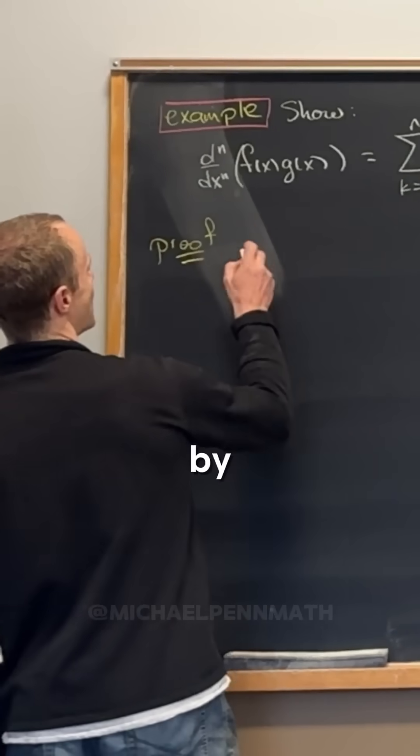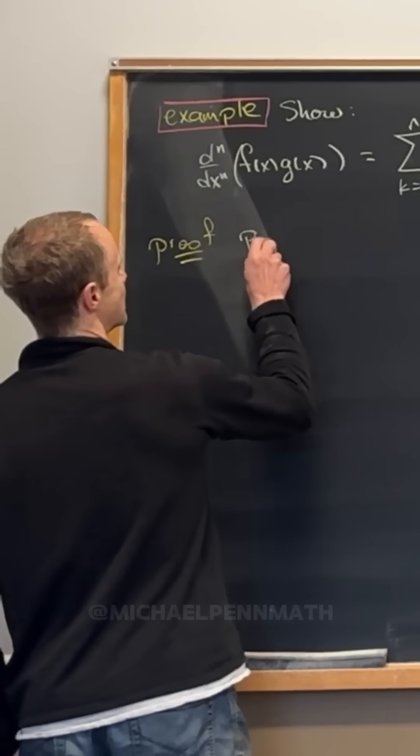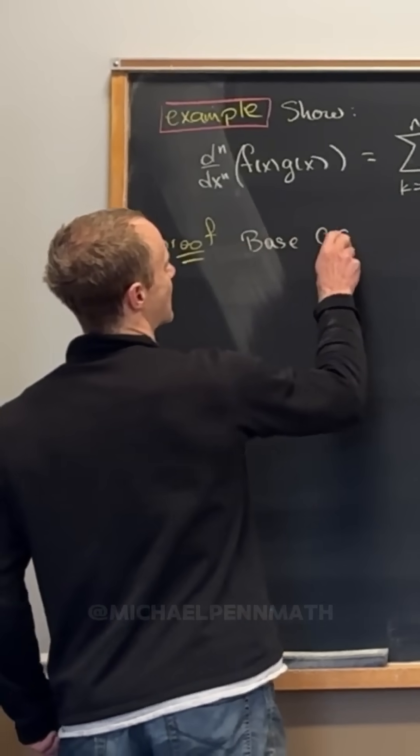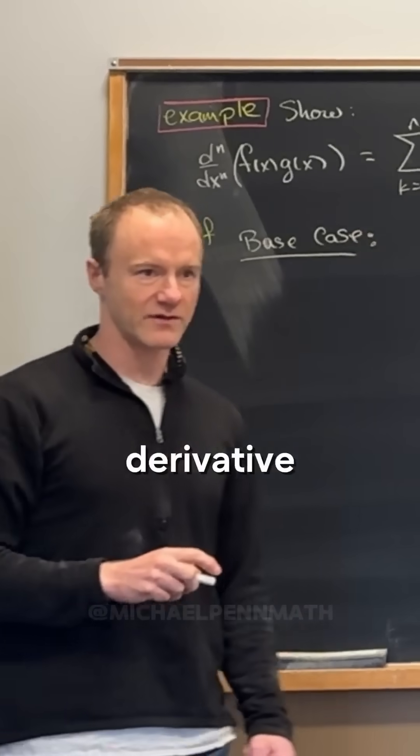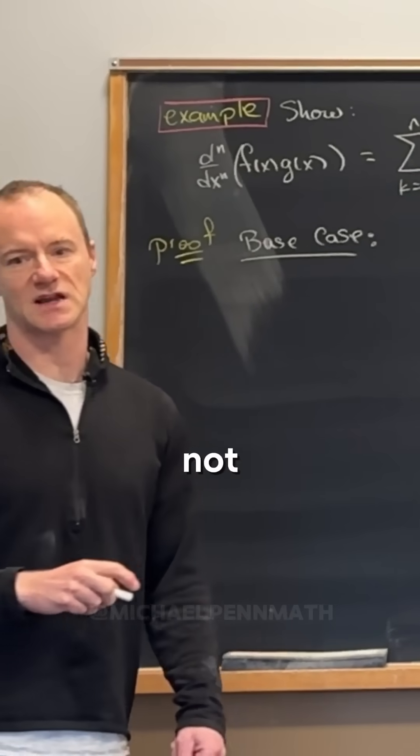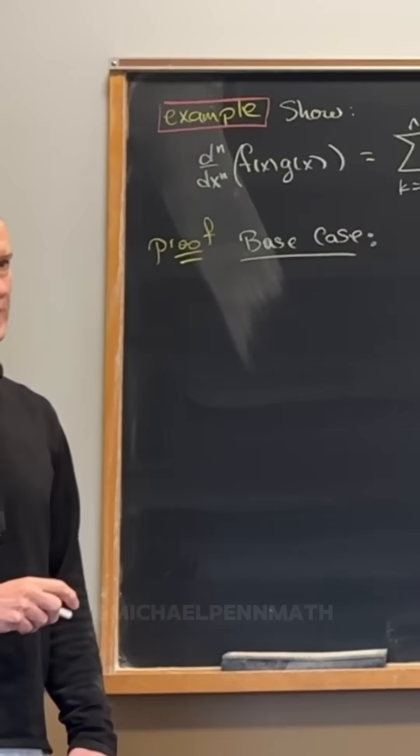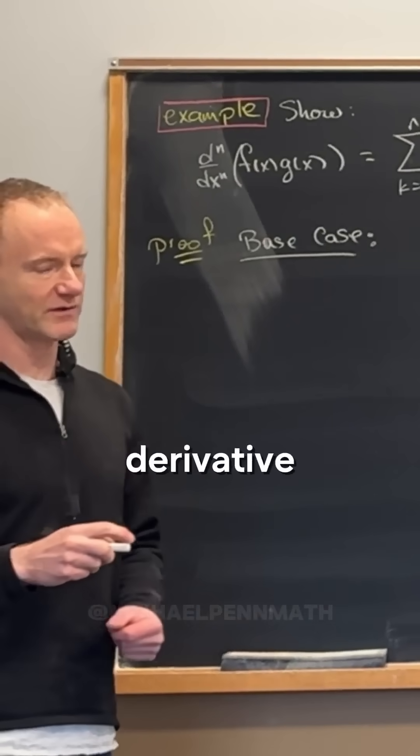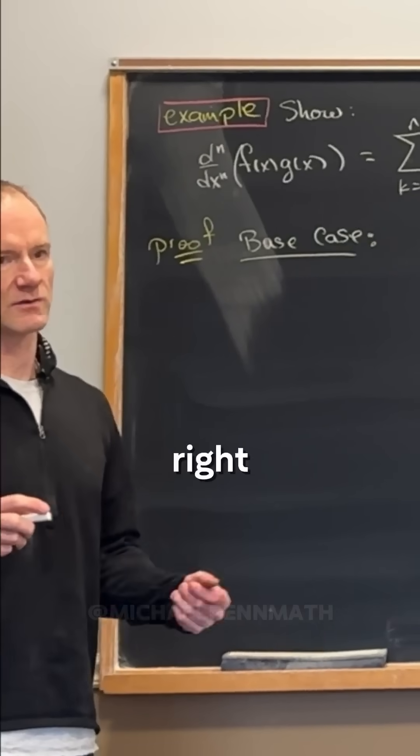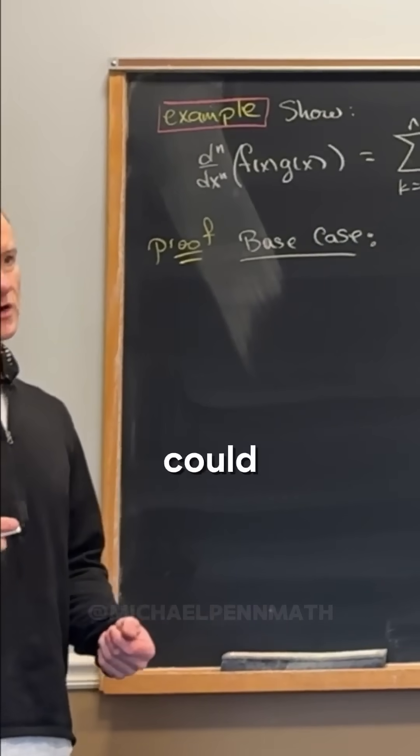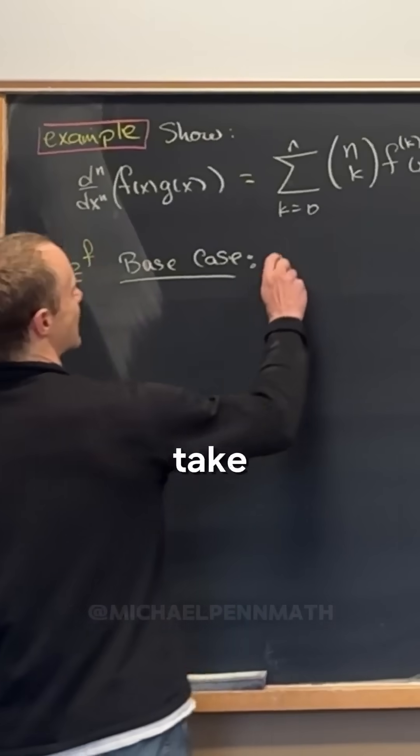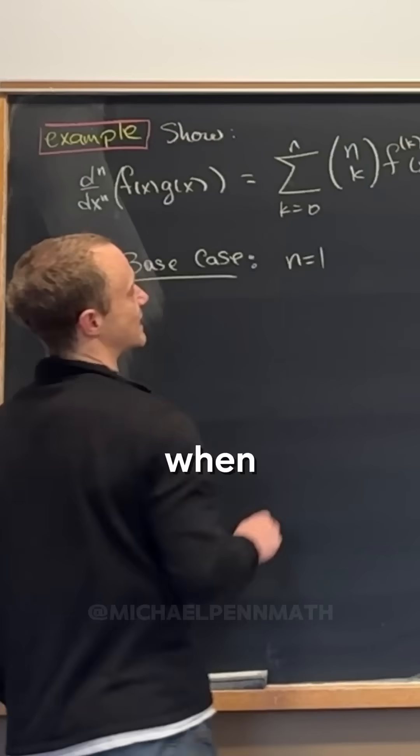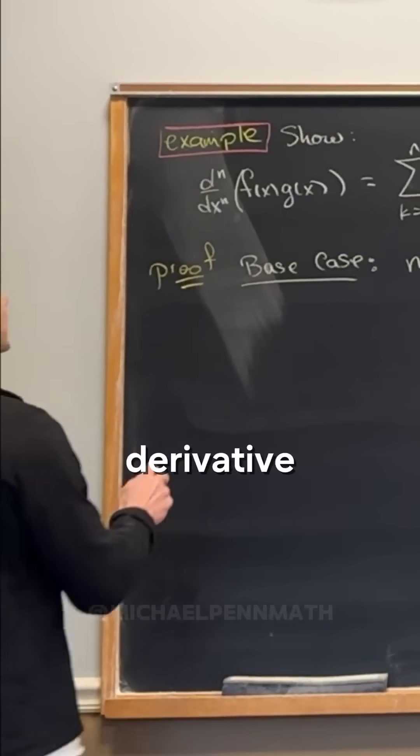We're going to do it by induction, which means we need a base case. Now I'd like to point out that the zeroth derivative could be the base case here. It's not super interesting, so we'll do a bigger base case. By the zeroth derivative, I just mean doing nothing, just the identity operator. But like I said, it's a boring base case, so let's take the case when n equals 1, so the first derivative.